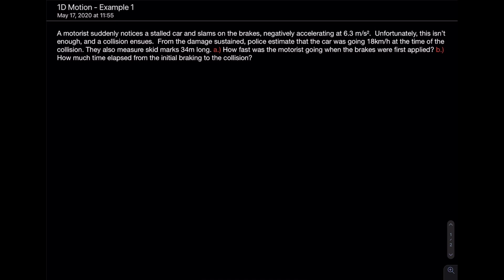A motorist suddenly notices a stalled car and slams on the brakes, negatively accelerating at 6.3 meters per second squared. Unfortunately, this isn't enough and a collision ensues. From the damage sustained, police estimate that the car was going 18 kilometers per hour at the time of the collision. They also measure skid marks 34 meters long. How fast was the motorist going when the brakes were first applied, and how much time elapsed from initial braking to the collision?